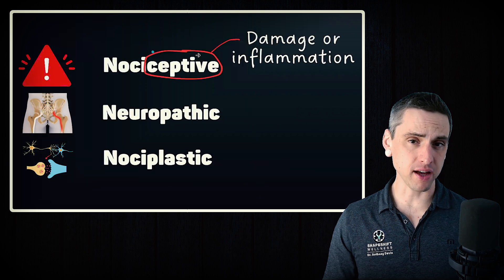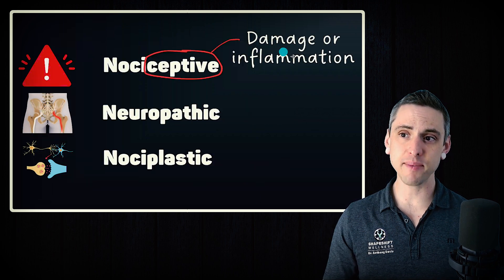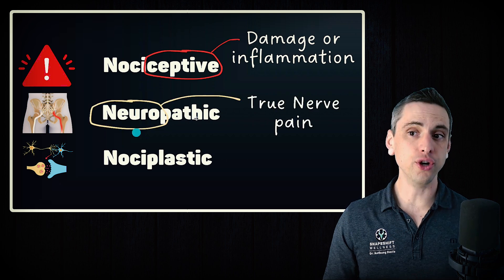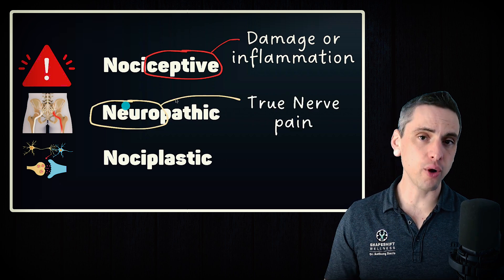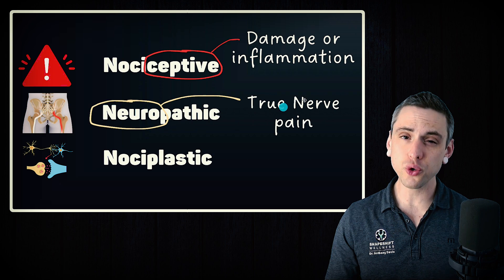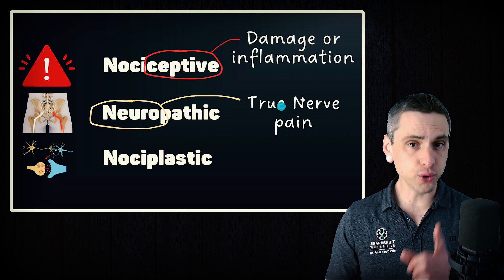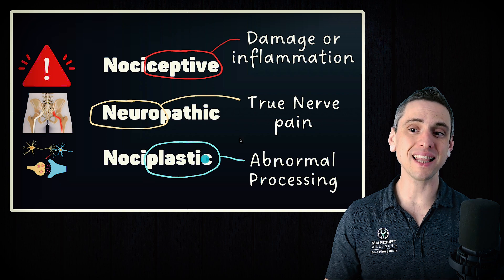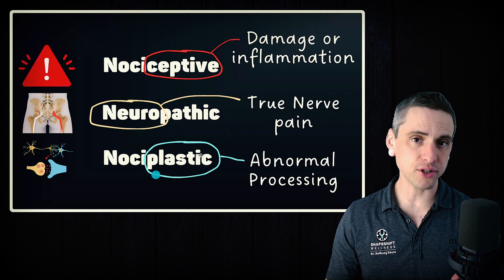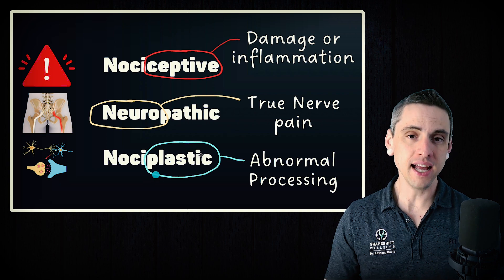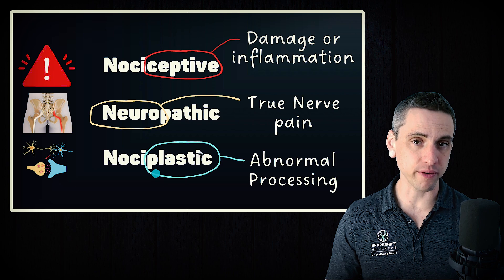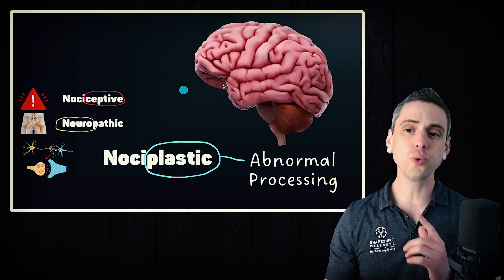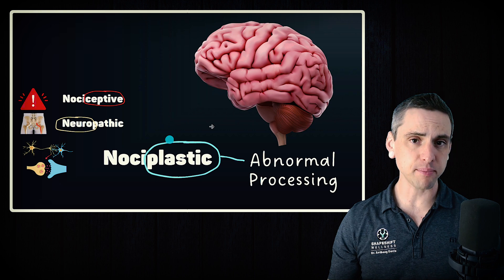Nociceptive is what most people think of when they think of pain — damage or inflammation. Neuropathic, meaning nerve, is true nerve pain, and true nerve pain is very rare. And lastly, we have nociplastic, which is plastic changes or neuroplasticity in the brain, spinal cord, and peripheral nerves that leads to abnormal processing of signals. Two really important things about nociplastic pain.